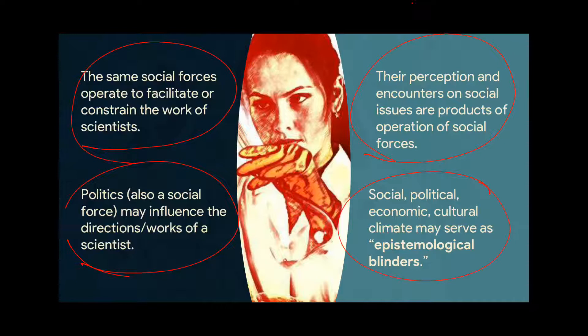The social, political, economic, and cultural climate where a scientist is exposed to can be called epistemological binders — these facilitate or constrain the problems you identify. For example, if you're a scientist born into a rich family in an urban center, it would be hard for you to imagine a research problem about the rural poor in a Lumad community in the south if you've been living in Metro Manila. Social forces can limit the perspectives you have in the world, like horse blinders.